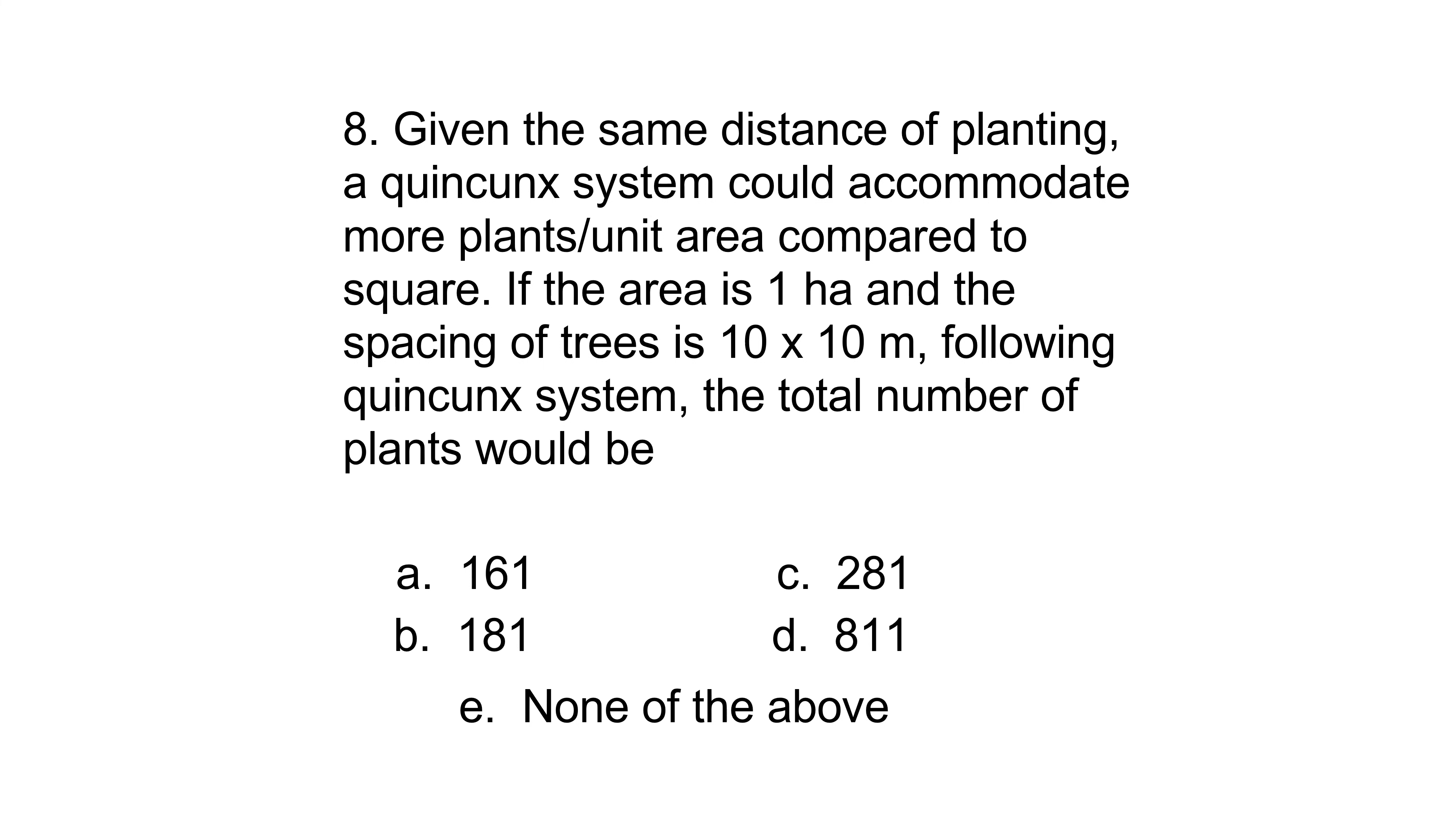Number eight: Given the same distance of planting, a quincunx system could accommodate more plants per unit area compared to square. If the area is 1 hectare and the spacing of trees is 10 by 10 meter, following quincunx system, the total number of plants would be: 161, 181, 281, 811, or none of the above. The answer is 181.